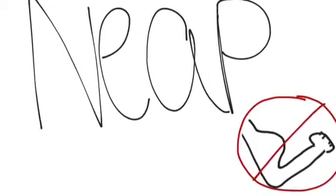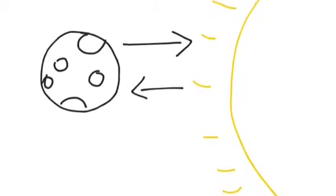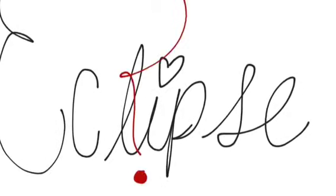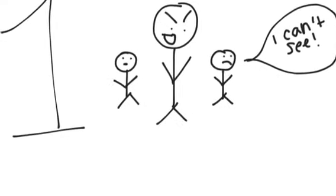Neap tides are weak tides and occur during the quarter moons. They happen when the gravitational forces of the moon and the sun are perpendicular to one another. What is an eclipse?